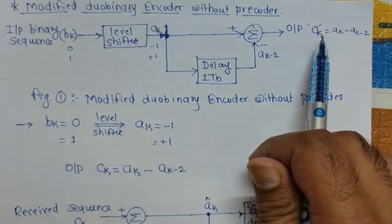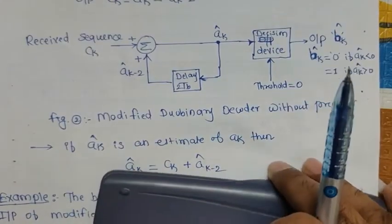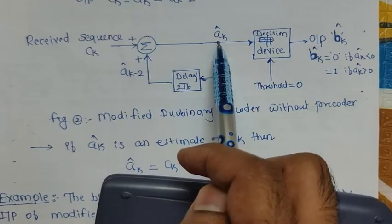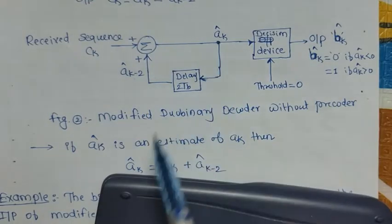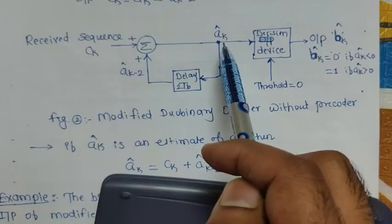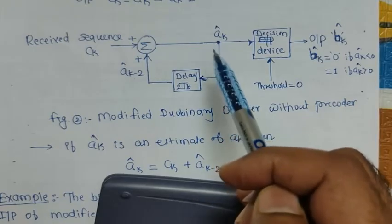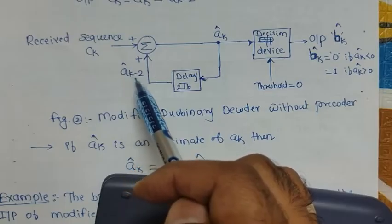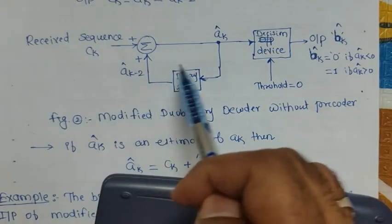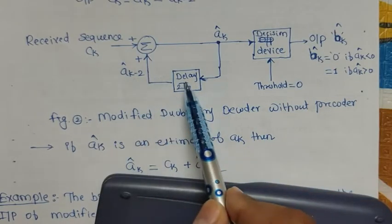This ck is the transmitted sequence, and we want to decode it back to the original sequence bk. On the receiver side, the received sequence is fed to a summer whose other input comes from ak_cap — the estimation of ak. The ak_cap is delayed by 2 Tb, giving ak_cap_minus_2. In order to estimate ak correctly, the receiver must know the initial ak value, otherwise it cannot decode the original sequence.